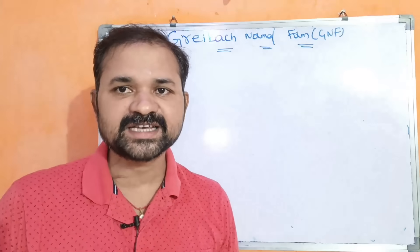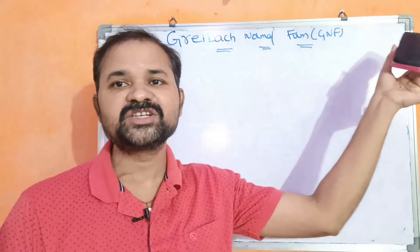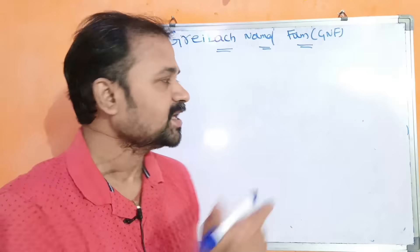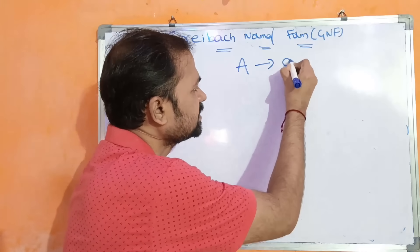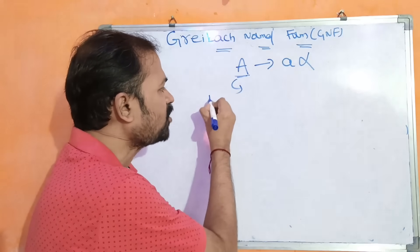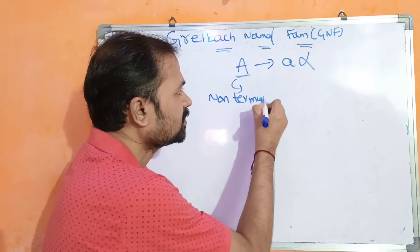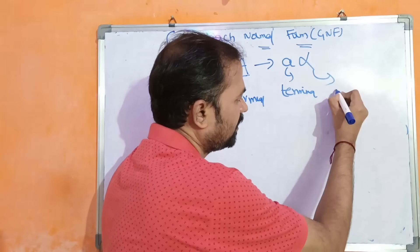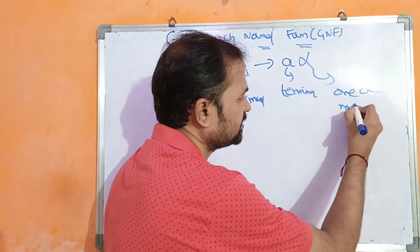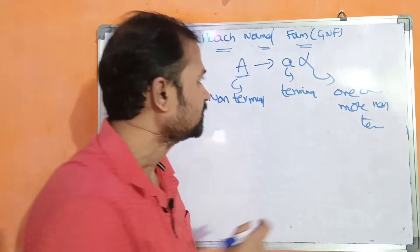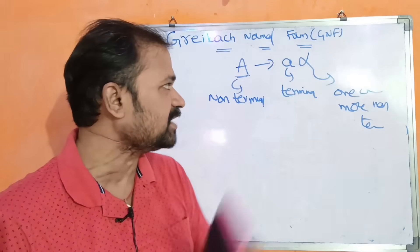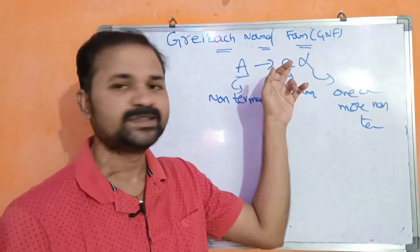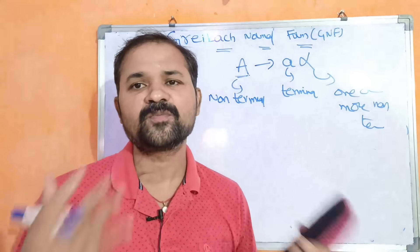In this video, we are going to discuss Greibach Normal Form, or GNF for short. A context-free grammar is said to be in GNF if the productions are of the form A implies a-alpha, where A is a non-terminal, small 'a' is a terminal, and alpha means one or more non-terminals.